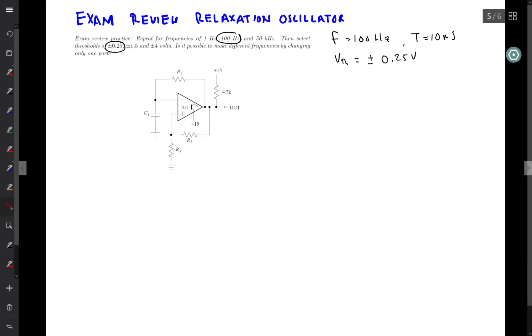This corresponds to a period of 10 milliseconds. And so what I need to do is pick the parts of R2 and R3 in order to provide the proper thresholds, and then R1 and C in order to provide the proper time constant to give the period needed.